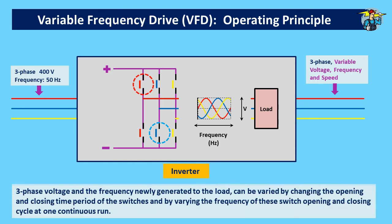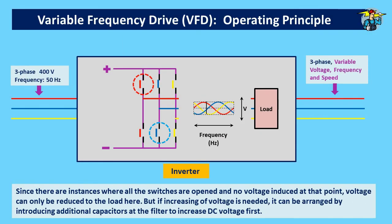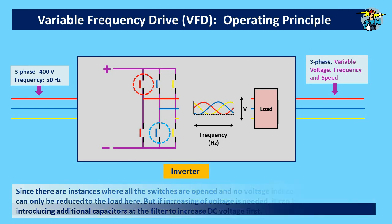The three-phase voltage and frequency newly generated to the load can be varied by changing the opening and closing time period of the switches, and by varying the frequency of the switch opening and closing cycle in one continuous run. Since there are instances where all switches are open and no voltage is induced, voltage can only be reduced to the load this way. But if increasing the voltage is needed, it can be arranged by introducing additional capacitors at the filter to increase DC voltage first.